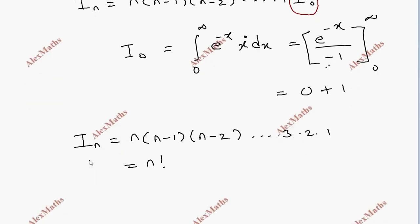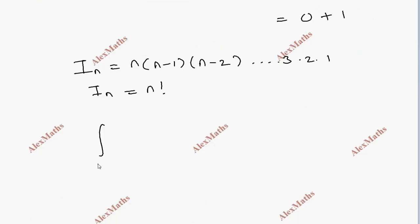So, I_n equals n factorial. Therefore, the integral from 0 to infinity of e to the power minus x times x to the power n dx is equal to n factorial.